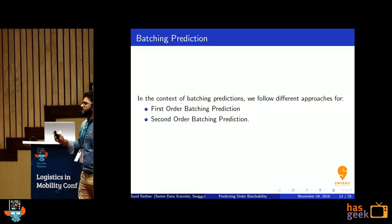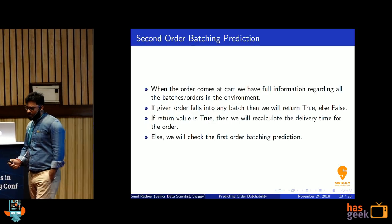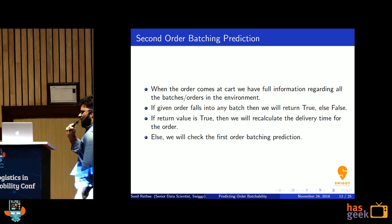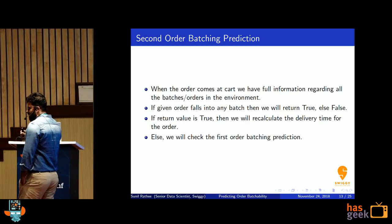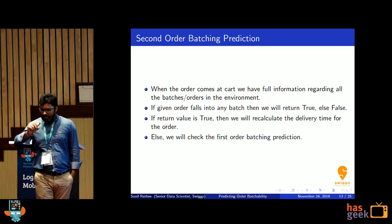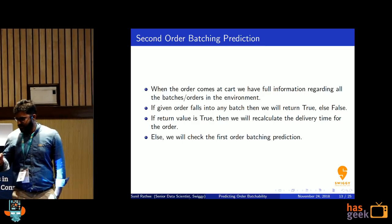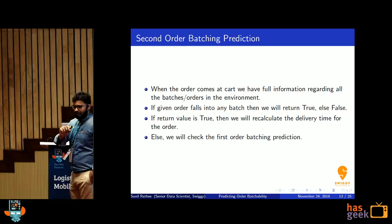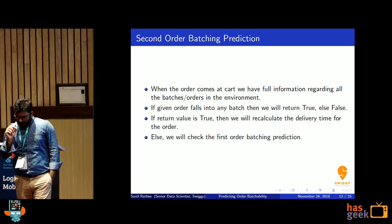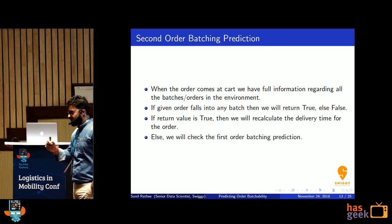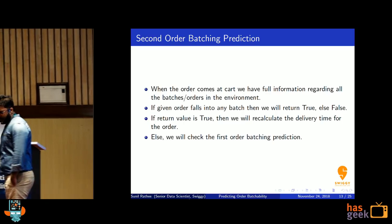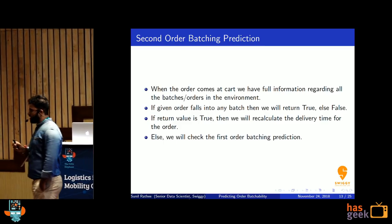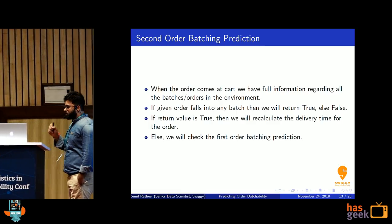Let's first discuss second order batching prediction, because it is more trivial than first order. When the order is at the cart, you have all the information about your environment — all orders, all batches. You check whether this order can be batched with an existing order by evaluating all conditions. If it can be batched, you know all the information: customer-to-customer distance, restaurant-to-restaurant distance, wait time, and all these properties. You pass this information to your time prediction algorithm and calculate the right SLA. If it cannot be batched, you throw it to first order batching prediction.